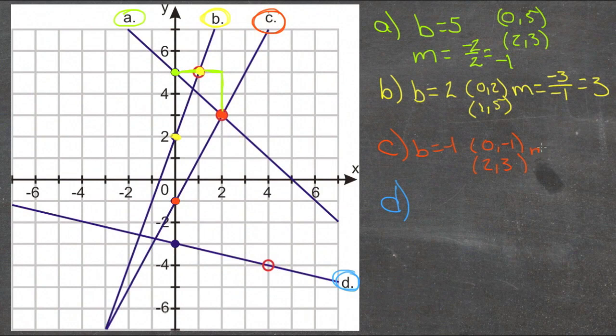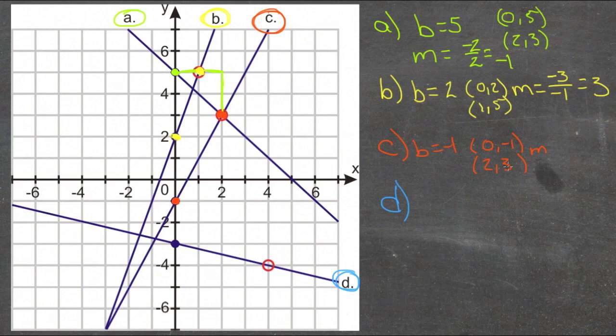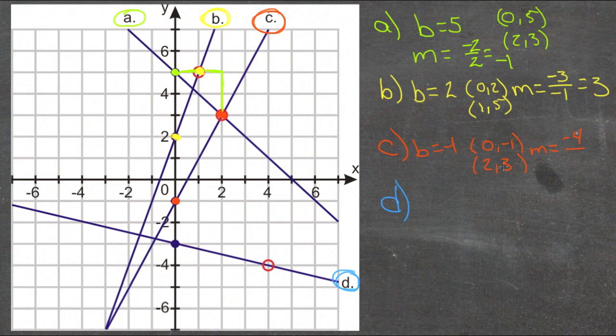And then our m is rise from 3 to negative 1. So rise negative 4. And run negative 2. Negative 4 divided by negative 2 is 2.